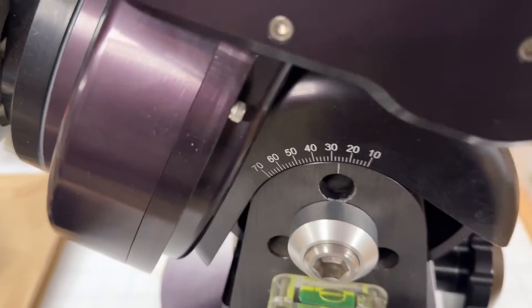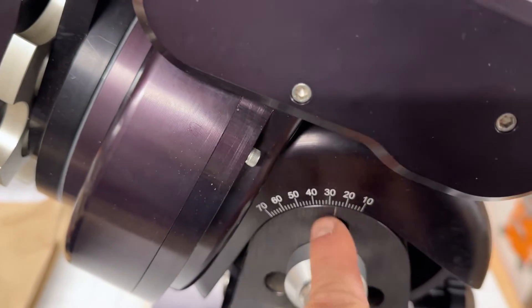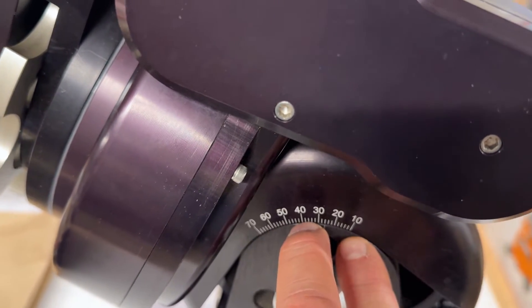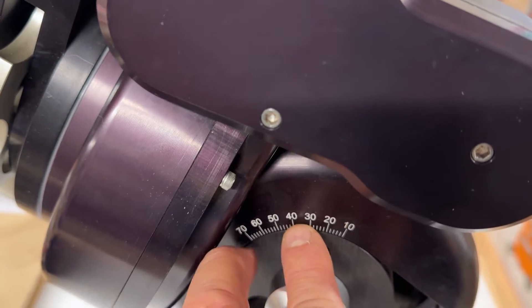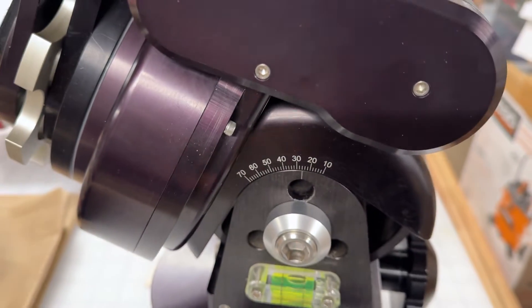And the problem is it only goes in chunks. So it goes from maybe 10 to 30 or 40 and then 40 to 60. I'm not sure exactly what it is. I'll put this in description.